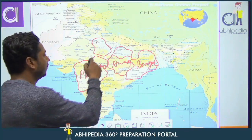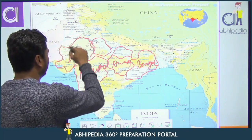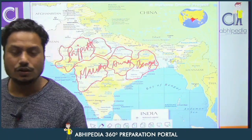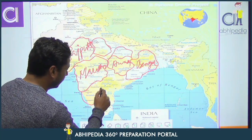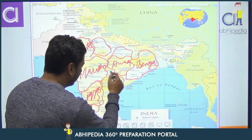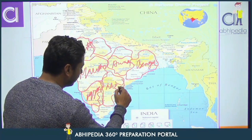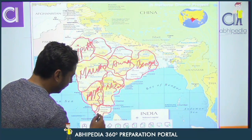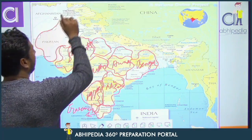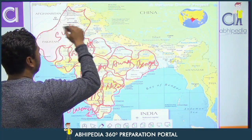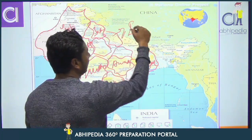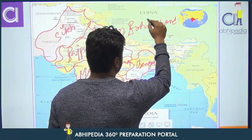We also studied Rajput, and here on the map we have Mysore, Nizams, Travancore, Sikhs, Jats, and in this region, Rohilkhand.